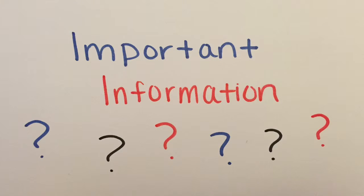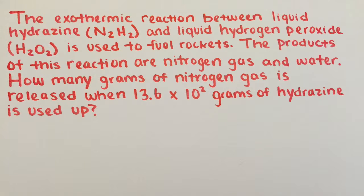First, let's analyze our question and determine any information that can be derived that will be essential for the conversion. The exothermic reaction between liquid hydrazine and liquid hydrogen peroxide is used to fuel rockets. The products of this reaction are nitrogen gas and water.